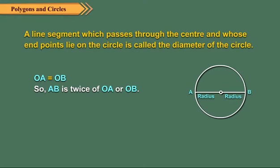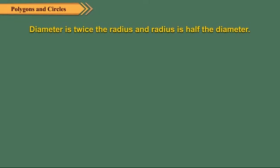Here, OA is the radius and OB is also the radius of the circle. So OA and OB are equal. This means the length of two radii of a circle gives the length of its diameter. So we can say diameter is twice the radius and radius is half the diameter.